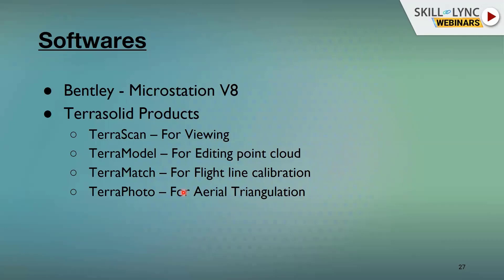TerraSolid has about 16 to 17 sub-modules. The major ones are TerraScan, TerraModel, TerraMatch, and TerraPhoto. TerraScan is mainly used for viewing point cloud data — you can visualize by intensity mode, elevation mode, or color mode.